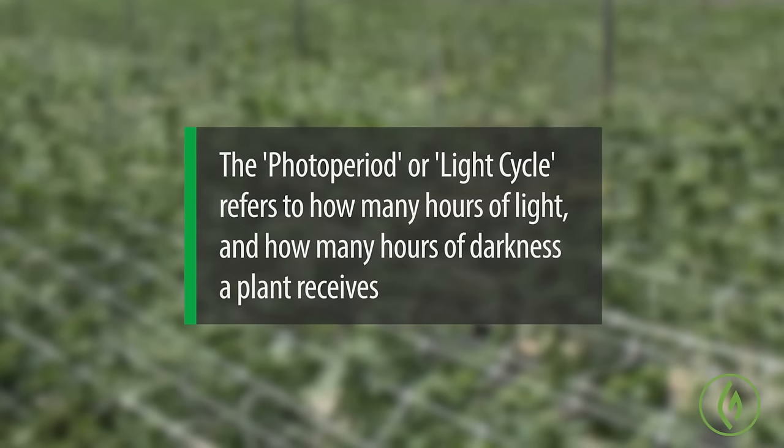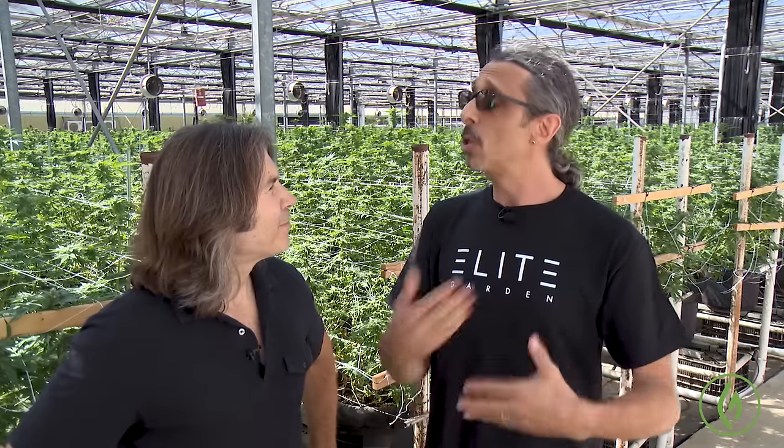In the springtime the days are getting longer, and the plant is in that veg cycle — it recognizes these days are getting longer. But after the summer solstice, the days begin to get shorter. This is the trigger that tells the plants it's time to begin flowering. The flowering of the cannabis plant is directly controlled by the number of hours of darkness it receives. A typical cannabis variety won't begin to flower until it receives 12 hours of continuous darkness, and it takes multiple days of 12 hours of darkness for the flowering hormone to build up sufficiently inside the plant to trigger it to go from vegetating to flower.